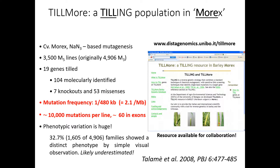I hope to convince you that what is a disadvantage in wheat — namely too many mutants because it's a polyploid — in barley, which behaves more as a diploid species, becomes an advantage because it has a much smaller number of mutants compared to wheat. Therefore, using bulk-segregant analysis, we can go much faster to the candidates.